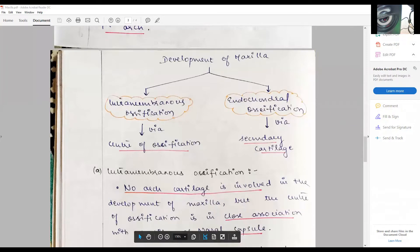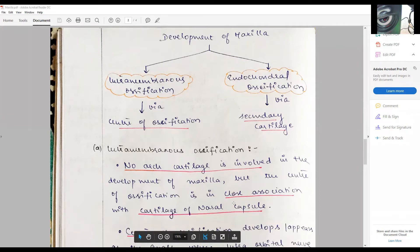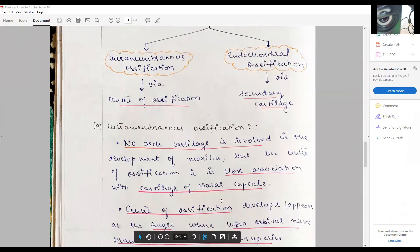To go about in detail, the intramembranous ossification: there is no specific arch cartilage involvement in the development of maxilla, but the center of ossification is in close proximity or association with the cartilage of nasal capsules.